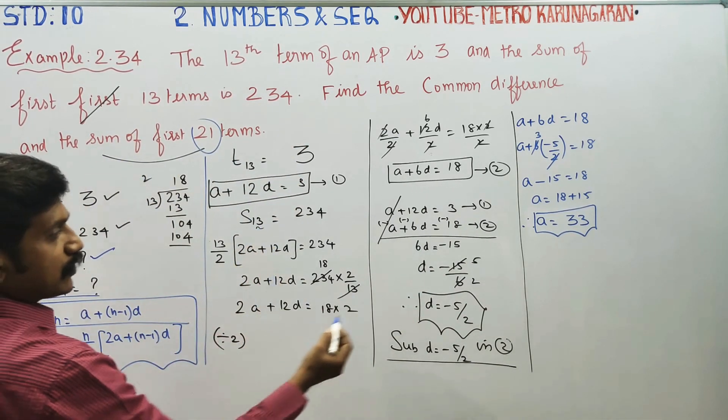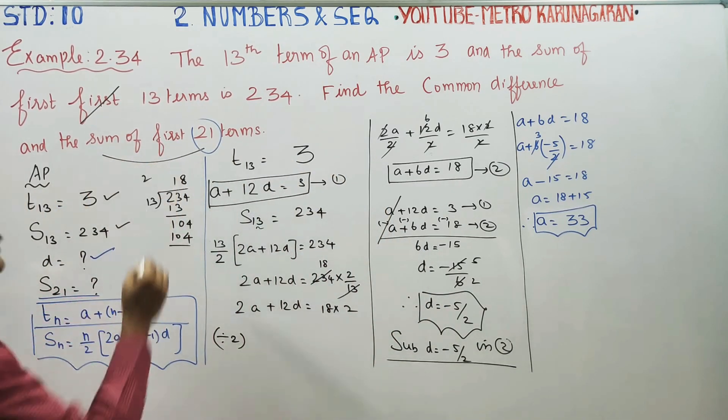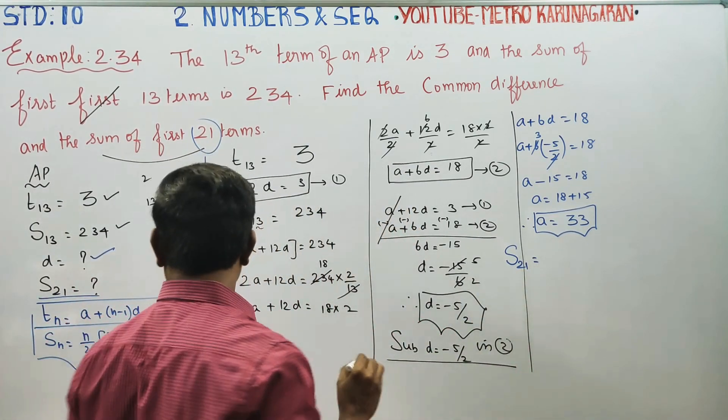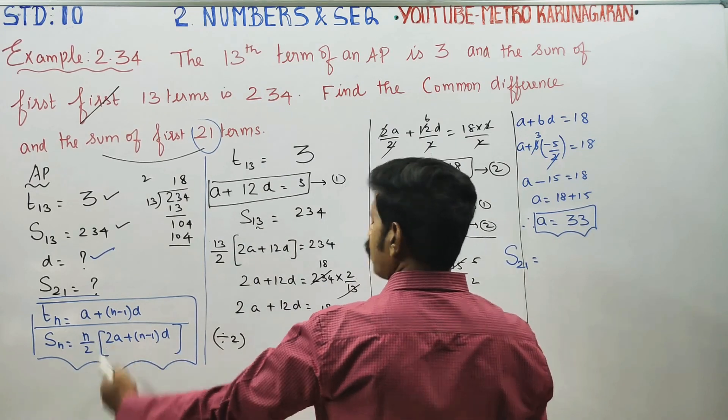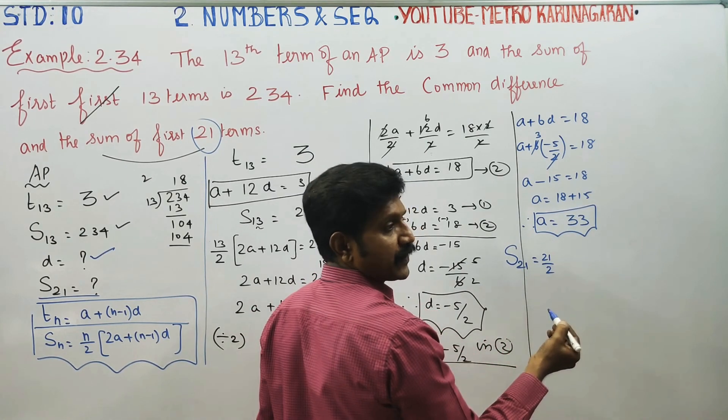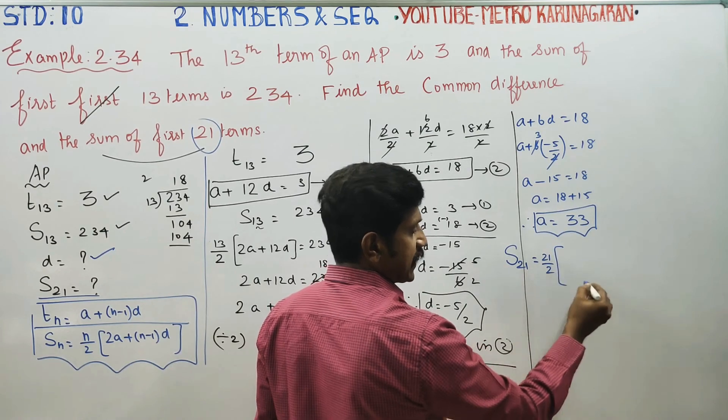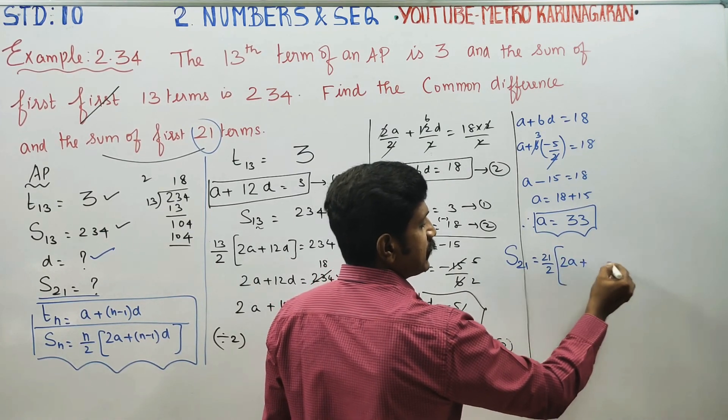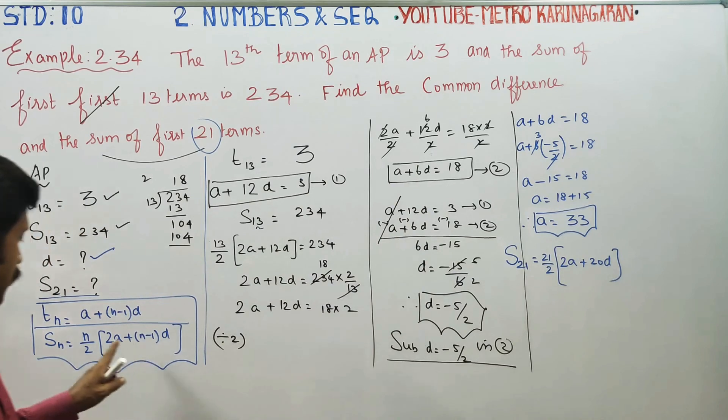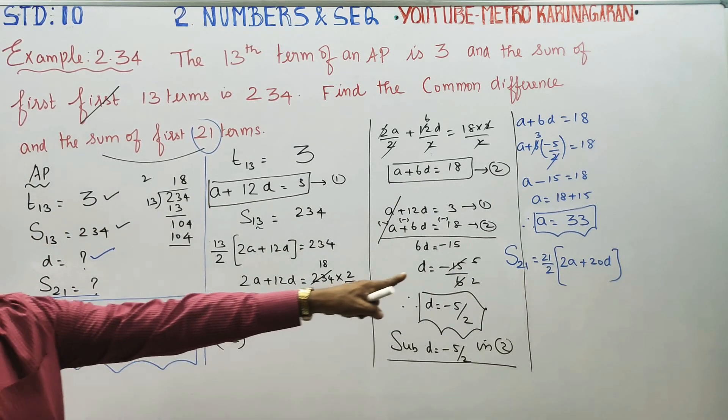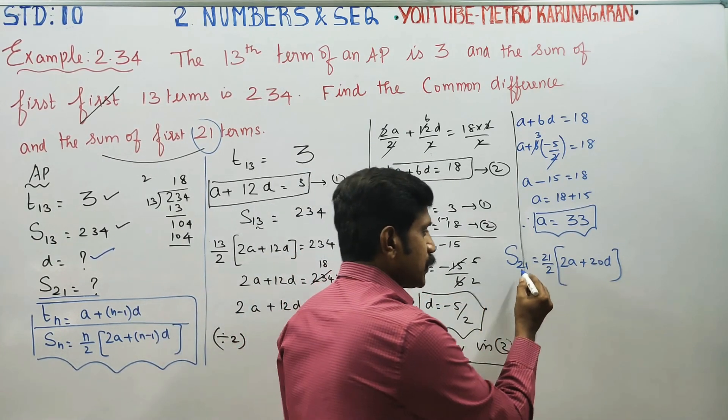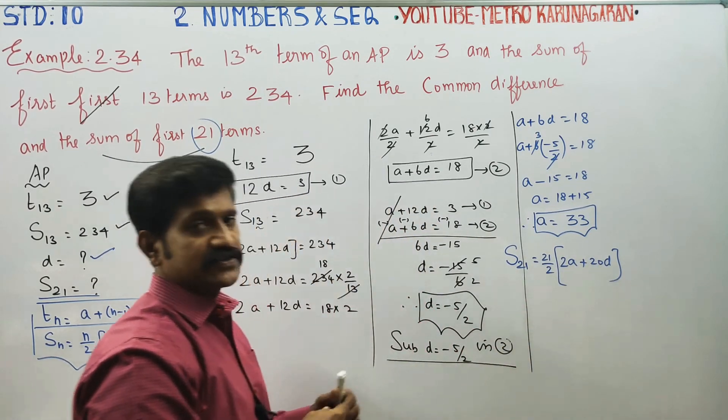The common difference is minus 5 by 2. Now for the sum of first 21 terms, use the summation formula again: S21 equals 21 by 2 times 2A plus 20D. Substitute the values: N equals 21, A equals 33, D equals minus 5 by 2.